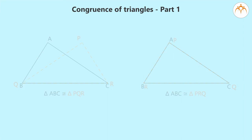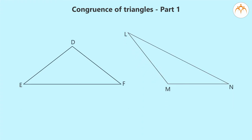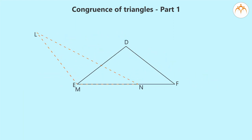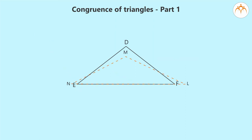Now, if we take these two triangles, how will we know if they are congruent? We will keep triangle DEF over triangle LMN in different ways and see if they match perfectly. Triangle DEF and triangle LMN are not congruent. Similarly, we keep triangle LMN on triangle DEF in various ways and see if they match. Then we realize that these two triangles never match with each other perfectly. This means that these two triangles are not congruent with each other.